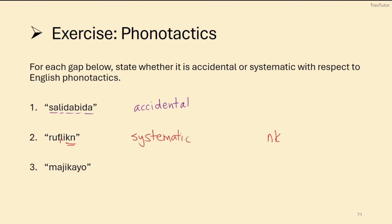What about the last one — 'majikayo'? This might sound Japanese to you, but it could be an English word. English phonotactics allows it; we just don't have it. So this is accidental. Looking at all three words, two of them could be English words, but the second one — 'rufflicking' — would not be accepted by English speakers as an English-sounding word.